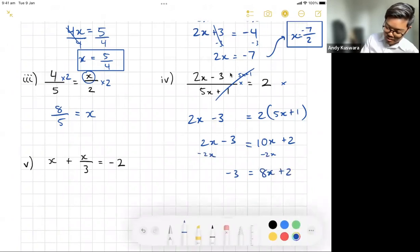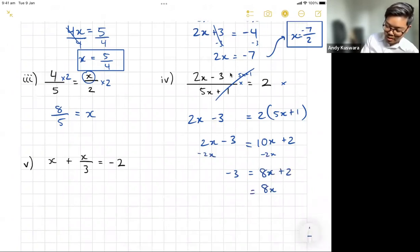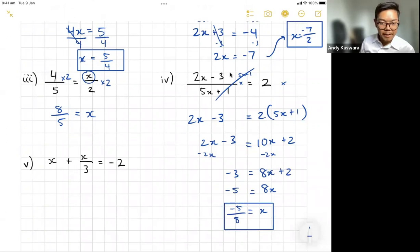Equals to negative 3. And almost done, minus 2 to both sides, 8x equals to minus 5, and then from there, x will equal to minus 5 divided by 8. There's my solution.